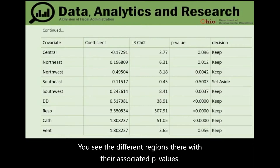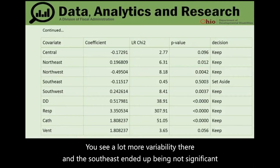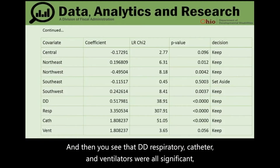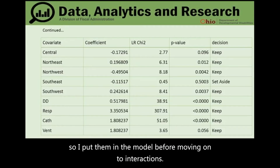Looking at the different regions with their associated p-values, there was a lot more variability. Southeast ended up being not significant at the 0.2 level and was set aside.